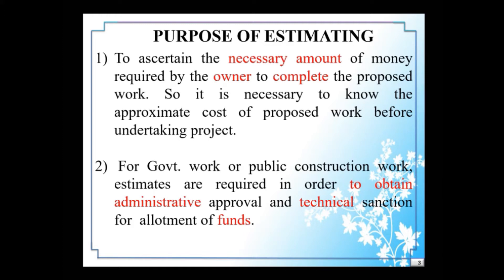Second: for government work or public construction work, estimates are required in order to obtain administrative approval and technical sanction for allotment of funds. For any government work, administrative and technical sanction is compulsory, and without this the work order is not issued. If you want administrative and technical sanction from the competent authority to release the funds, an estimate is required along with the submission drawing.